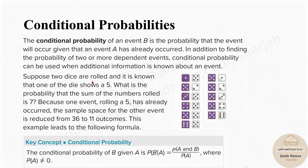Suppose two dice are rolled and it is known that one die shows a five. What is the probability that the sum of the numbers rolled is 7? Because one event — rolling a five — has already occurred, the sample space of the other event is reduced.